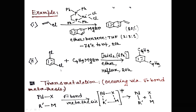Here we see examples of Kumada coupling reactions. First, a vinyl halide reacts with a Grignard reagent in the presence of nickel catalyst to give the coupled product with a yield of 80%, using ether, benzene, and tetrahydrofuran as solvent in a 2:3:1 proportion. In another example, an aryl halide reacts with a Grignard reagent in the presence of nickel catalyst to give the coupled product.